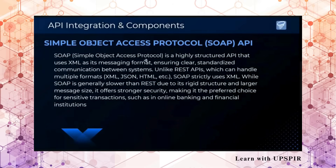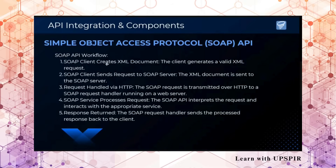SOAP — Simple Object Access Protocol — is a highly structured API that uses XML as the messaging format. Unlike REST APIs, which can handle multiple data formats like XML, JSON, and HTML, SOAP strictly uses XML. SOAP is generally slower than REST due to its rigid structure and large message size, but it offers stronger security, making it the preferred choice for sensitive transactions such as online banking and financial institutions. The SOAP API workflow is: client creates XML document, SOAP client sends request to SOAP server, request handled via HTTP, SOAP service processes the request, and response is returned.